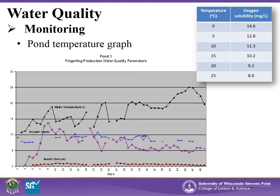Ponds can also undergo stratification during the summer. This is when higher water temperatures and lack of wind form layers of various water densities in the pond. These layers, especially near the bottom, may become anaerobic, posing negative effects for the fish. These situations are why pond oxygen problems are most acute in the late summer, such as August, when your ponds have the highest biomass of fish and possibly the least wind or activity at high temperatures.